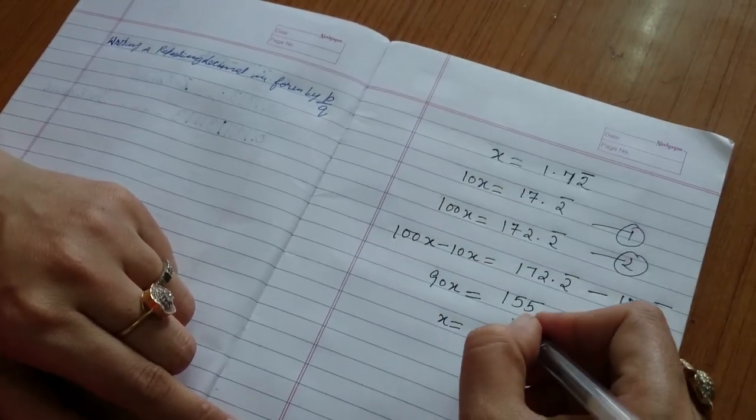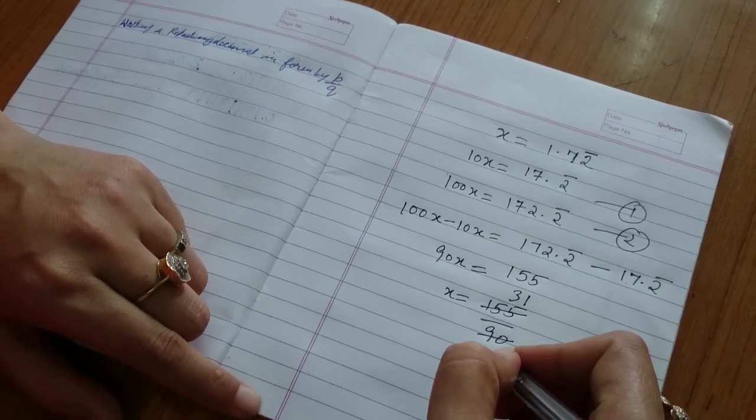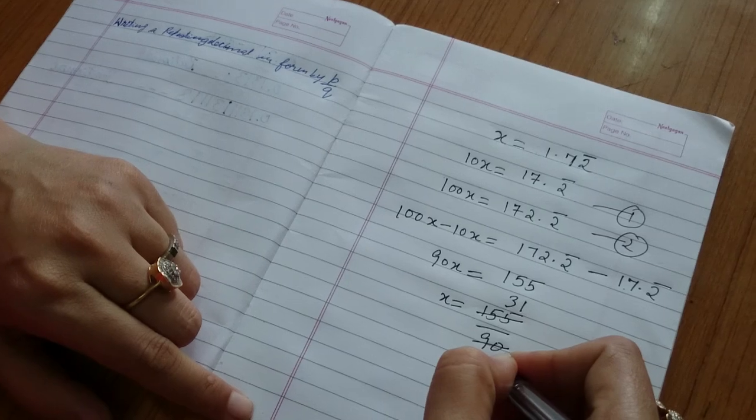What do we get? 5, 3s are 15, 5, 1s are 5. And in the denominator? 3, 5, 1s.